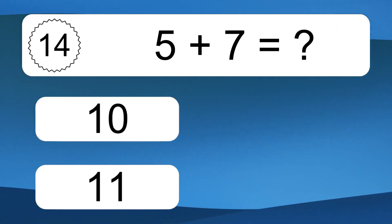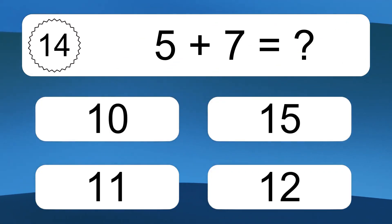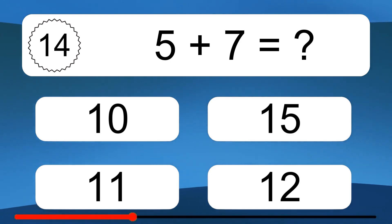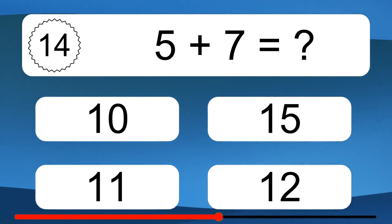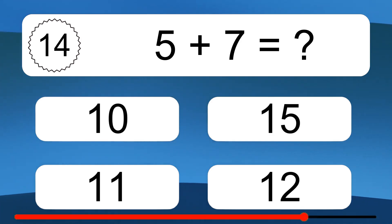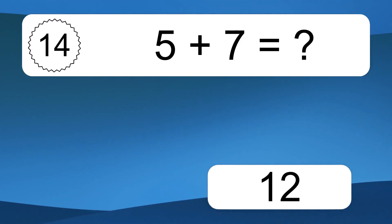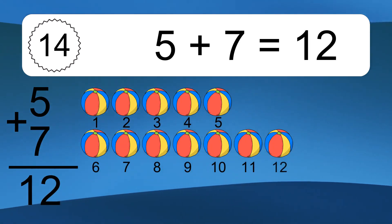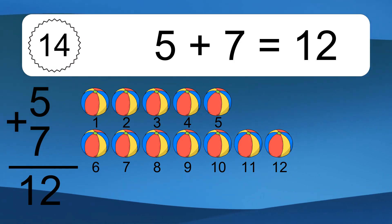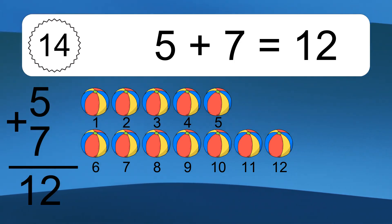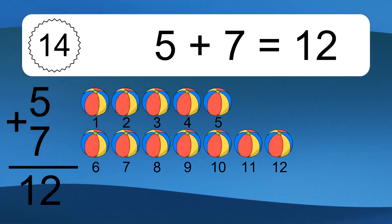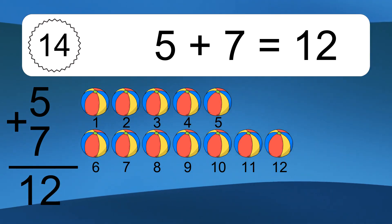5 plus 7 equals what? 5 plus 7 equals 12. Let's count it: 1, 2, 3, 4, 5, 6, 7, 8, 9, 10, 11, 12.